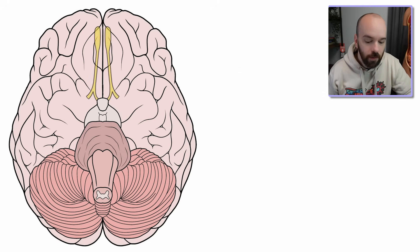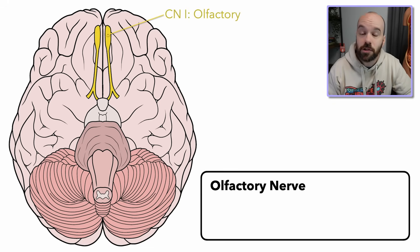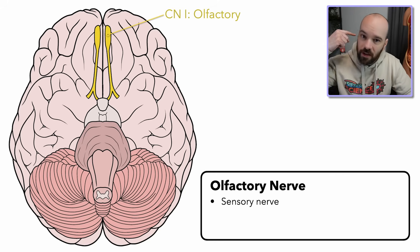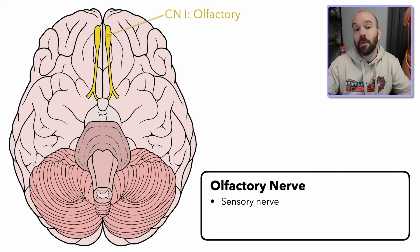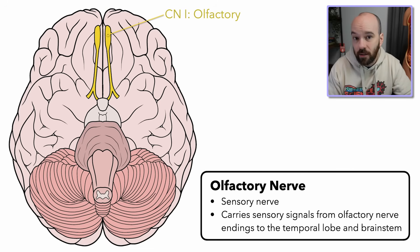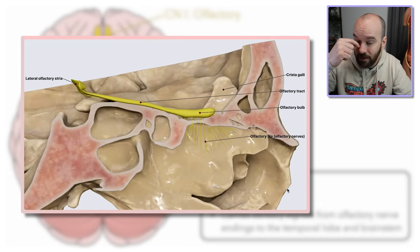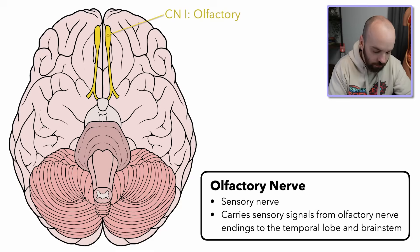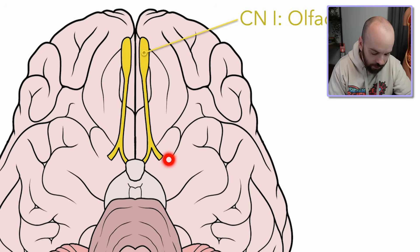Our first cranial nerve is going to be the olfactory nerve, which is all about smell. I just think of an old factory — an old smelly factory as you're driving down the road. The olfactory nerve is purely a sensory nerve; it's not going to send any signals out. It's going to carry signals from the olfactory nerve endings hanging down in our nose, passing through the cribriform plate in our skull. When chemicals get up into our nose, those sensory nerve endings detect them and send a signal back through the olfactory nerve to a couple different parts of the brain.